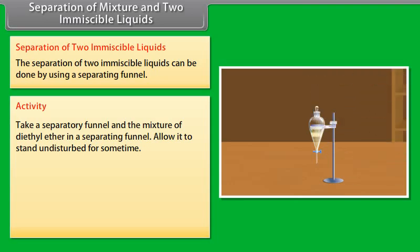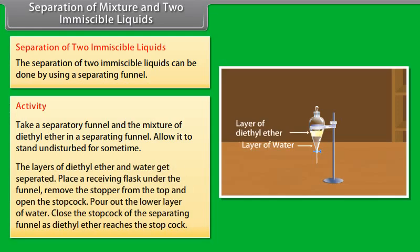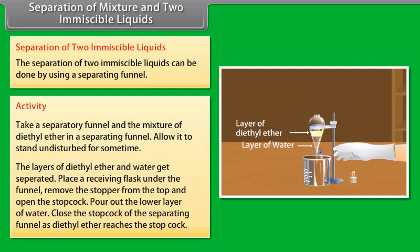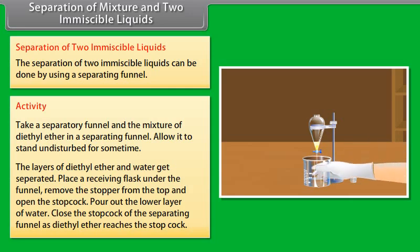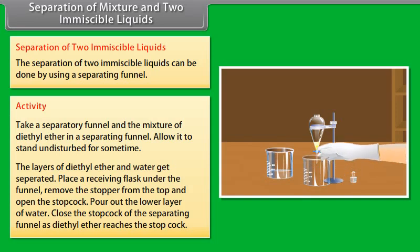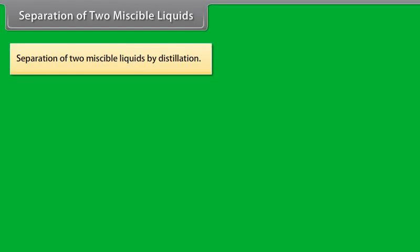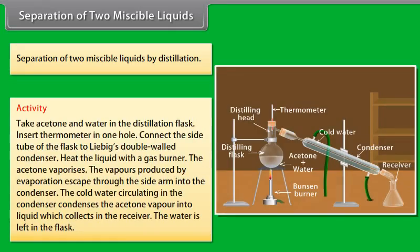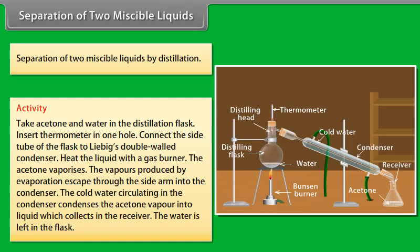Some substances do not dissolve in liquids — small particles of such substances remain suspended in the liquid. For example, sand and mud particles remain suspended in water. Similarly, solids may remain suspended in gas. These mixtures are called suspensions. A suspension is a heterogeneous mixture in which small particles of solids remain suspended throughout the mass of the liquid or gas without getting dissolved. The particles in a suspension are visible even to the normal eye, with a diameter of the order 10⁻⁵ cm. The particles can be separated from the liquid by filtration and will settle down on standing.